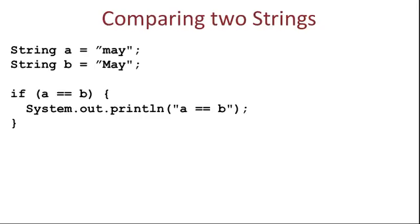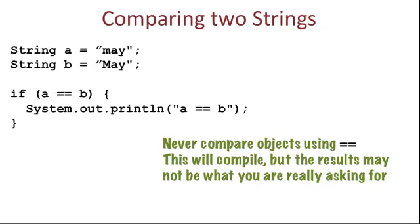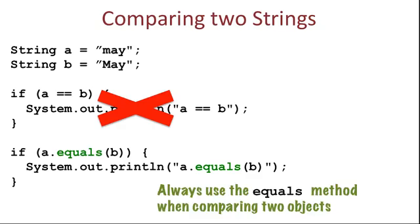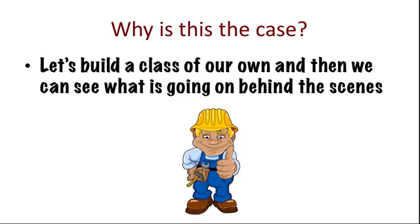Comparing objects is also very different from comparing primitive data types. We should never use the double equals to compare the contents of two objects. The program will compile and run, but you won't always get the results you expect. Instead, we use a method specifically designed to compare objects, called the equals method. Why is this the case? Well, to fully understand that, we should build our own class file and get a good look at what's going on behind the scenes.